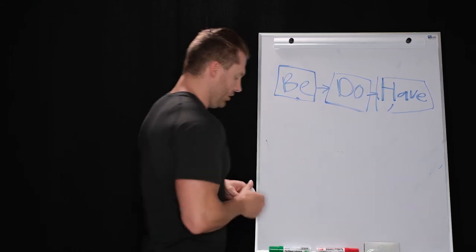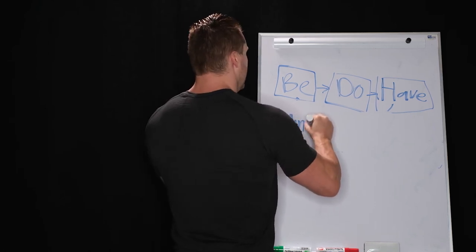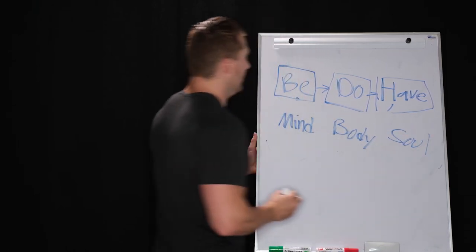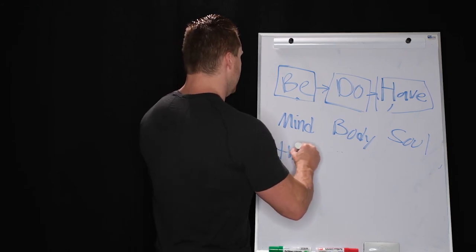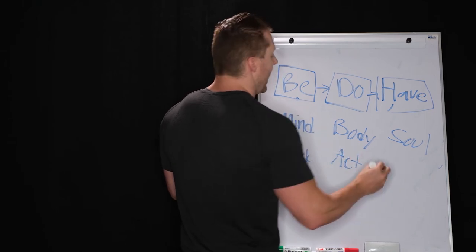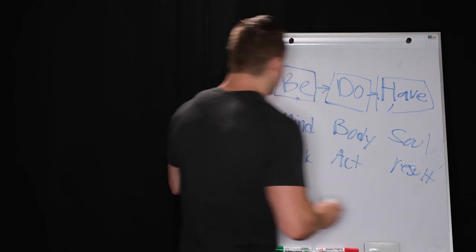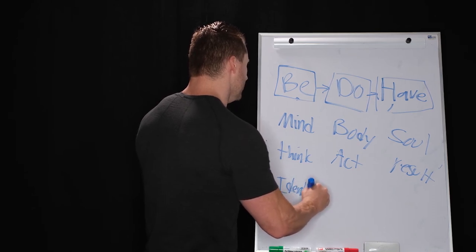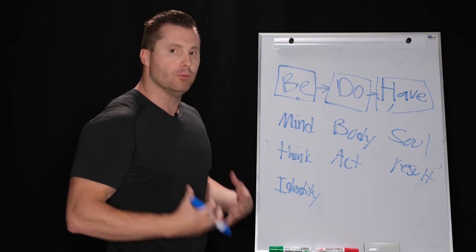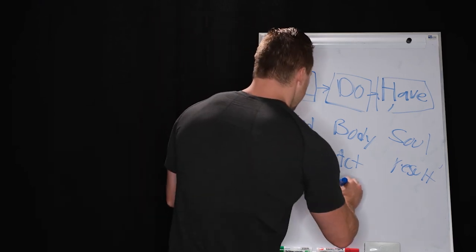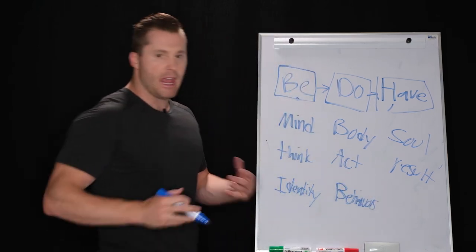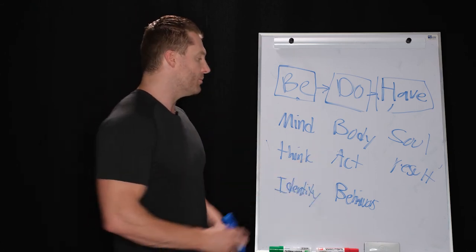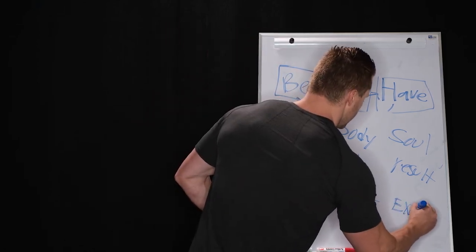So let's go a little bit deeper in this concept. So be is essentially our mind, do is our body, have is more of the soul. Be is what we think, body is how we act, have is the results. Be is your identity - who do you believe you are at your core? Do is your behaviors. You could always tell what someone's behaviors are in their relationships, in their health, in their business. And based upon your behaviors, you're going to have experiences.